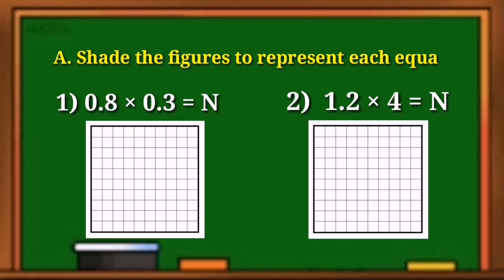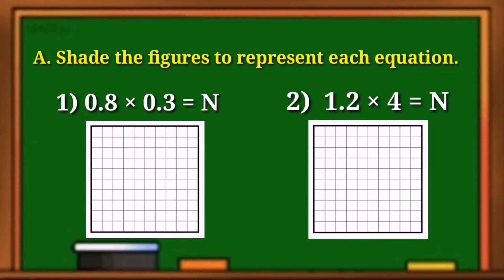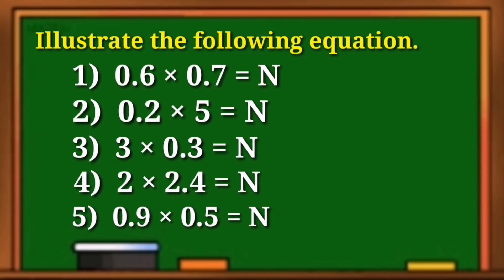Get your pen and paper to answer the following exercises. Exercise number 1, you are going to shade the figures to represent each number sentence. Exercise number 2, you are going to illustrate the following equation using area model. I'll give you 3 minutes to finish your work for this activity. Timer starts now.